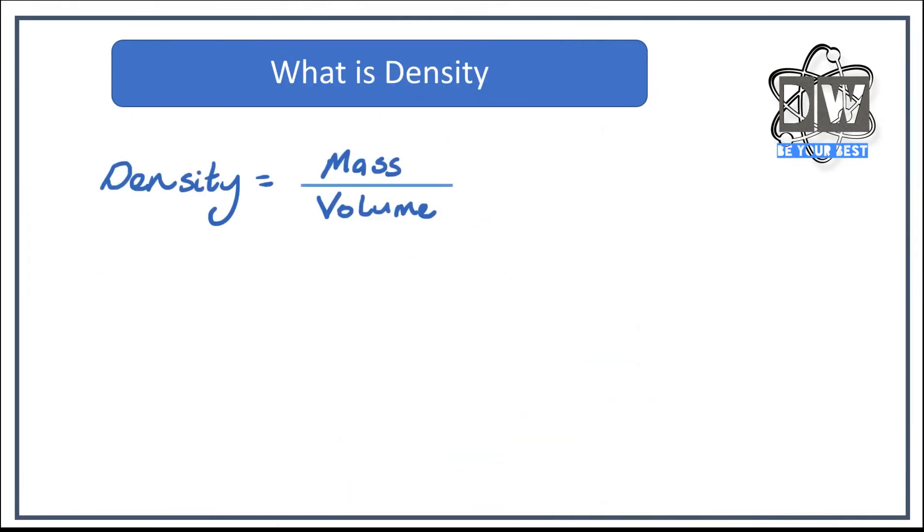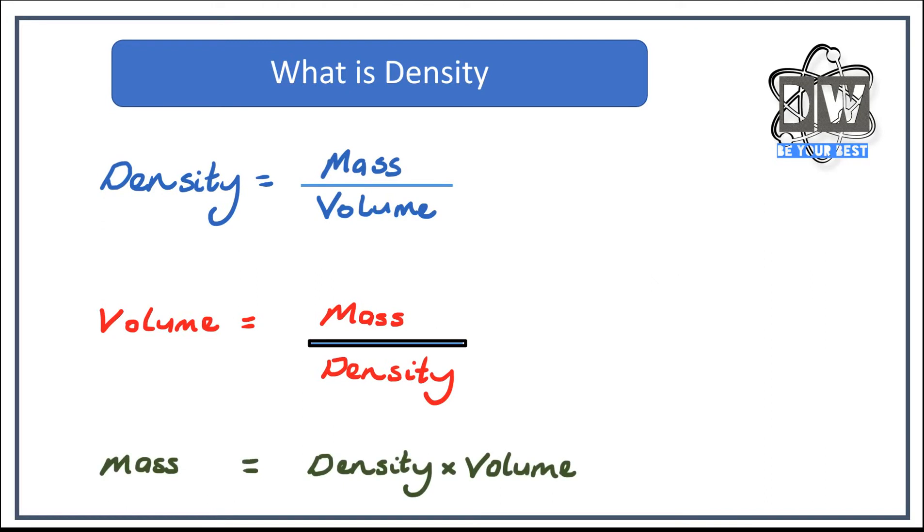Let's have a little look at all the different formulas that we might use. So density equals mass divided by volume, volume will equal mass divided by density, and mass will equal density times by volume. All comes from this main formula here. We could rearrange this to make all these other ones work.